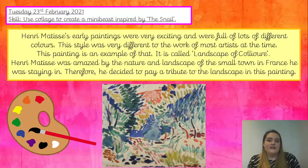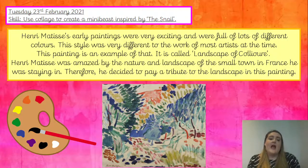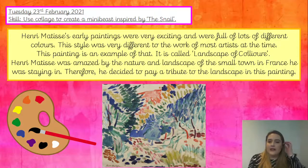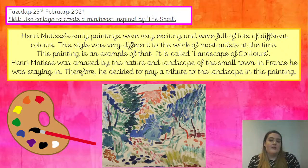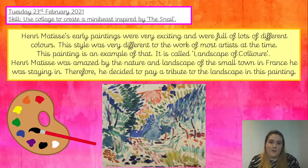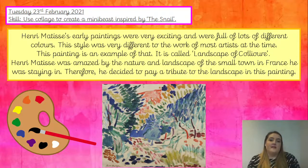This painting is an example of that — it's called Landscape of Colliure. Colliure is a small town in France where he was staying. He was so amazed by the nature and beauty of the landscape that he decided to pay tribute to it by painting it. I'd like you to look at his use of colour and the lines he has used, and discuss this with the person next to you or a grown-up at home. Pause the video and do this now.